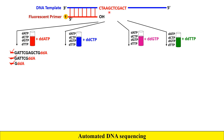Looking at the template sequence, which contains CTA, we need to find where thymine (T) occurs, because ddATP is complementary to thymine. Thymine appears at the second position, then at another position, and finally at the last position. So we get three fragments: the last thymidine replaced by ddATP, then the next, and so on.